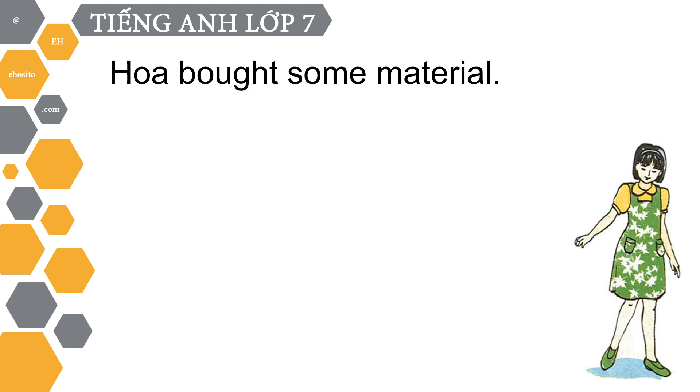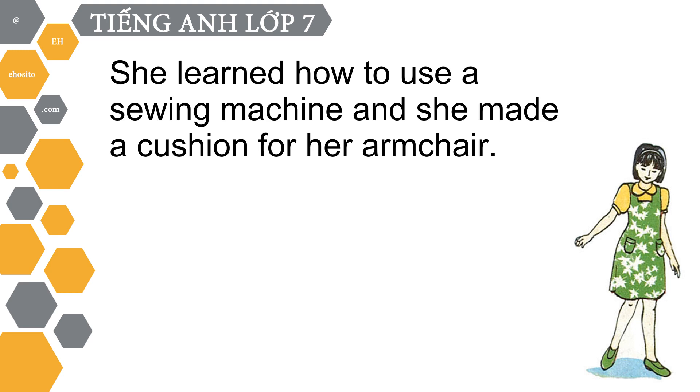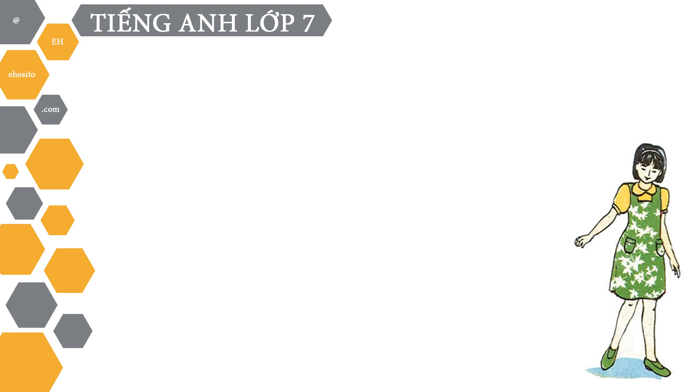Hoa bought some material. She learned how to use a sewing machine and she made a cushion for her armchair. It was blue and white.